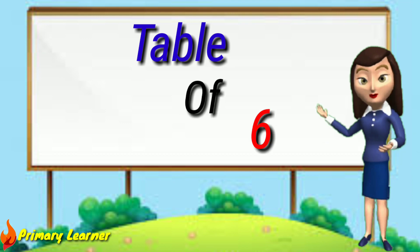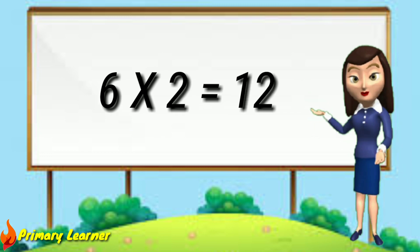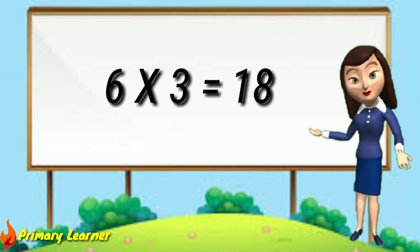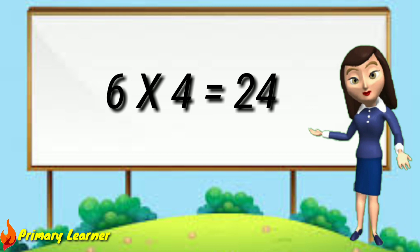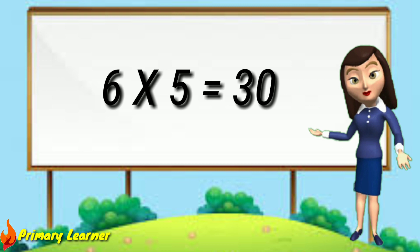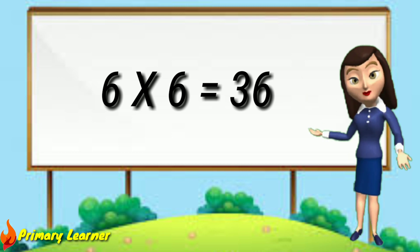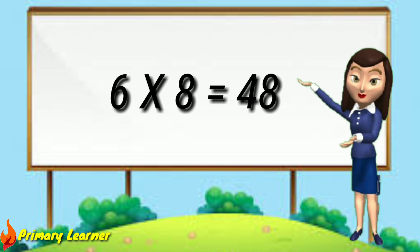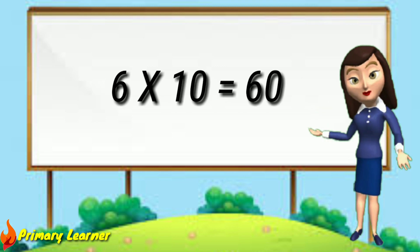Table of 6. 6 ones are 6. 6 twos are 12. 6 threes are 18. 6 fours are 24. 6 fives are 30. 6 sixes are 36. 6 sevens are forty-two. 6 eights are forty-eight. 6 nines are fifty-four. 6 tens are sixty.